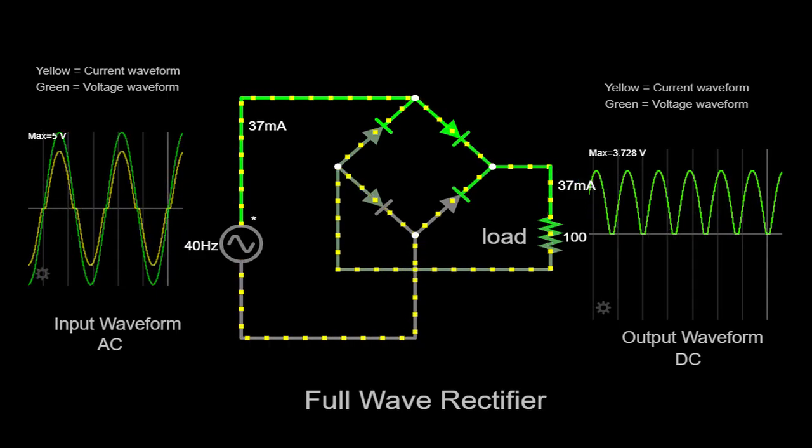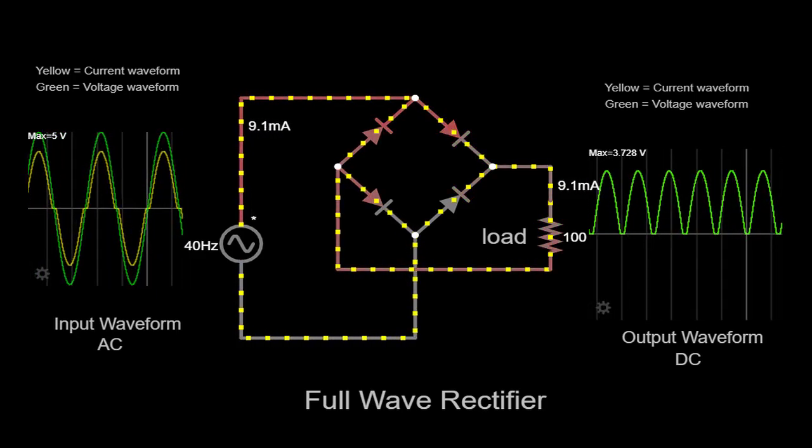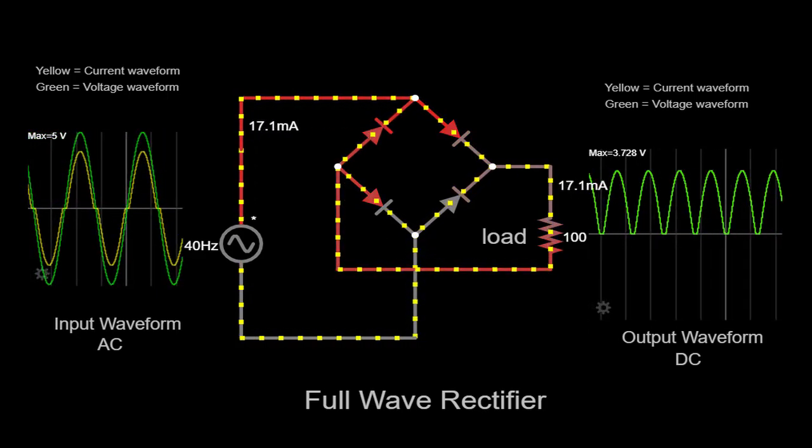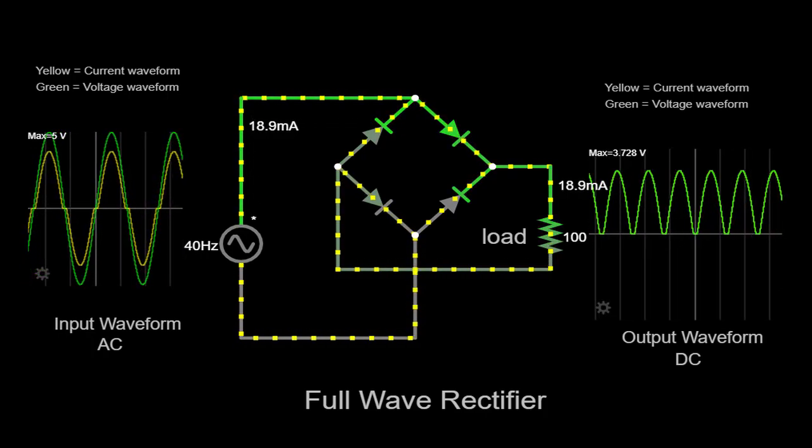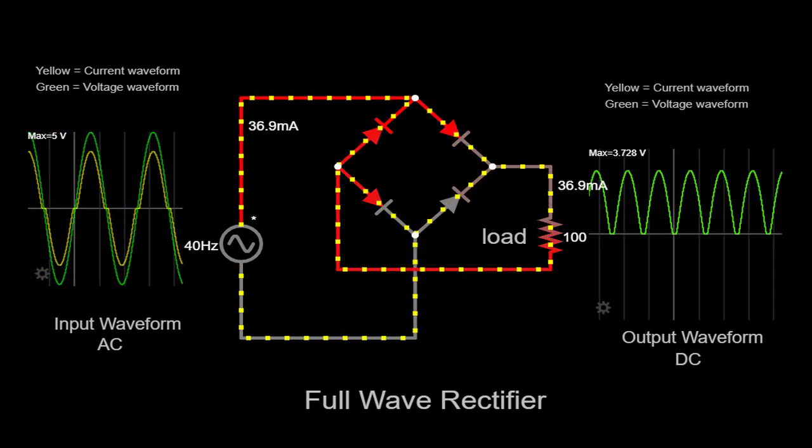The rectifier circuit consists of a combination of diodes that act as one-way valves for the electrical current. These diodes allow current to flow in only one direction while blocking the reverse flow.